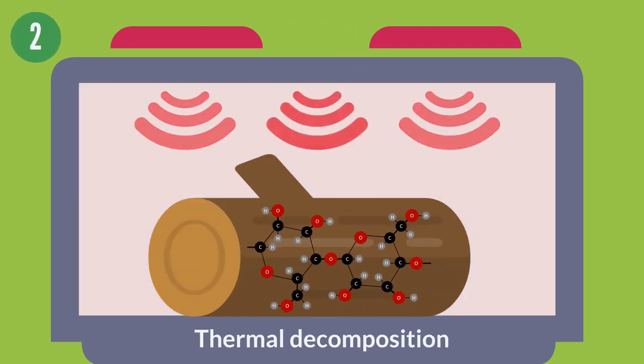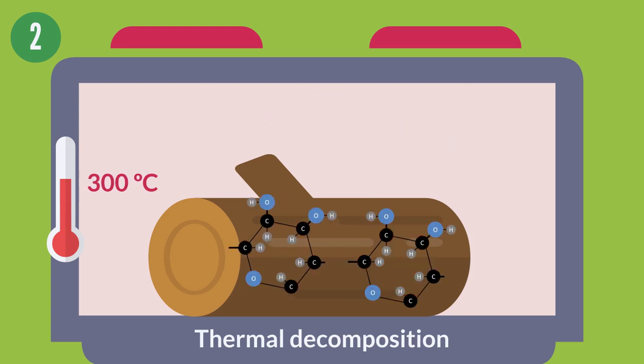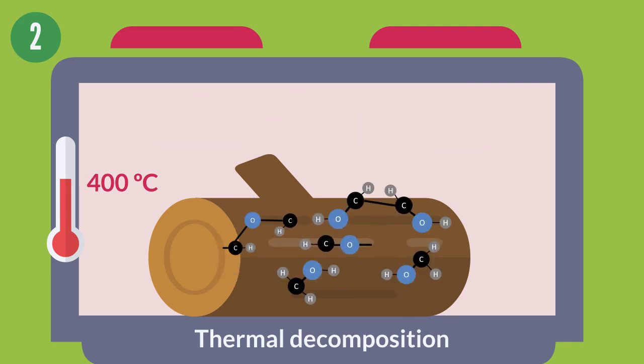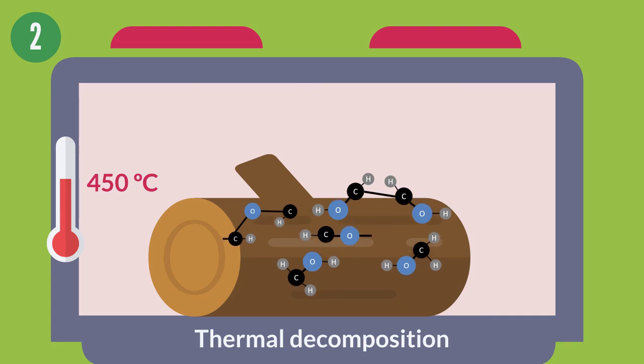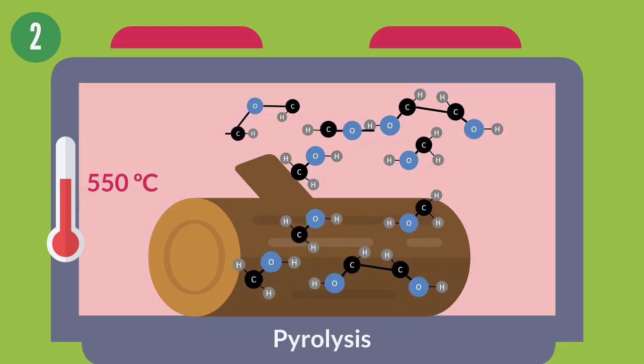Thermal decomposition. At 150 degrees Celsius, wood begins to break down. Some of the chemical bounds break. As a result, different chemical compounds are released into the air. This phase is also called pyrolysis. And it takes place at up to 550 degrees.